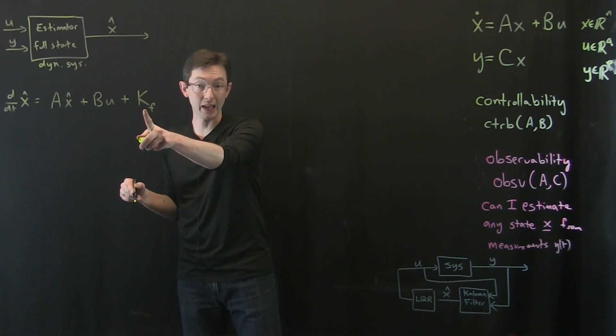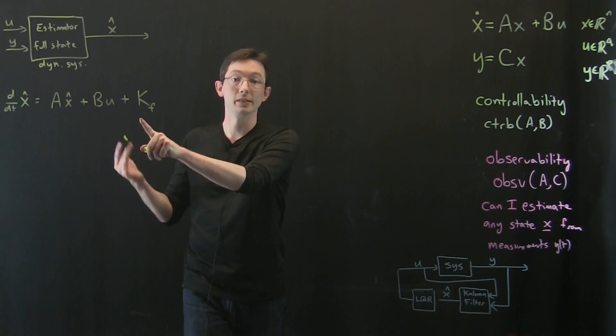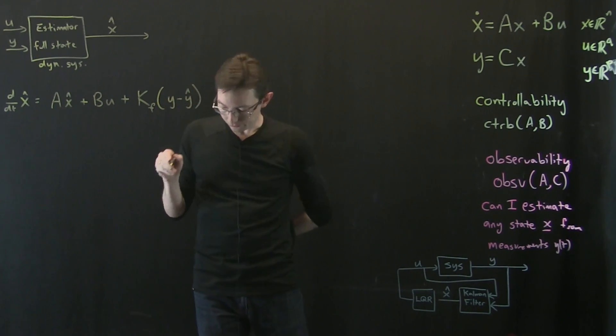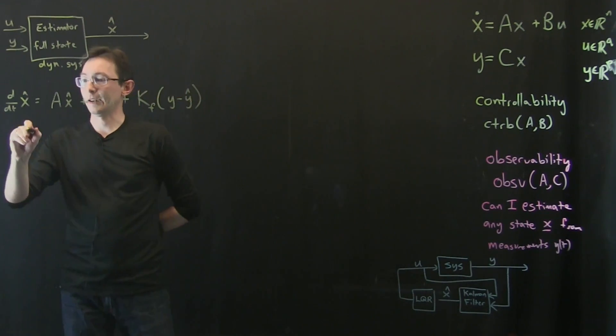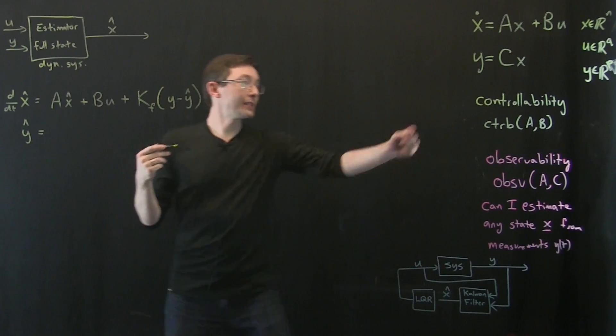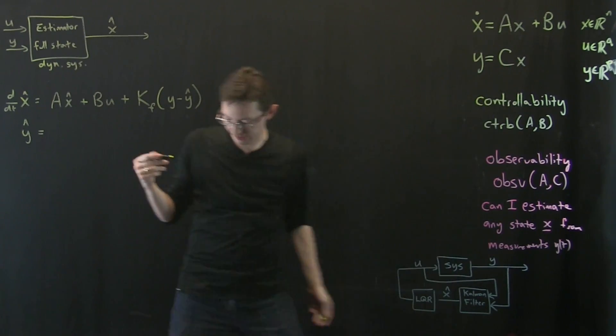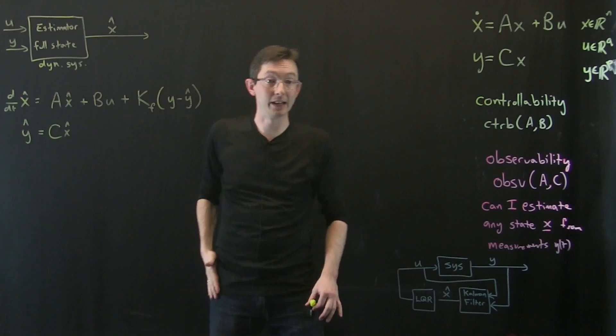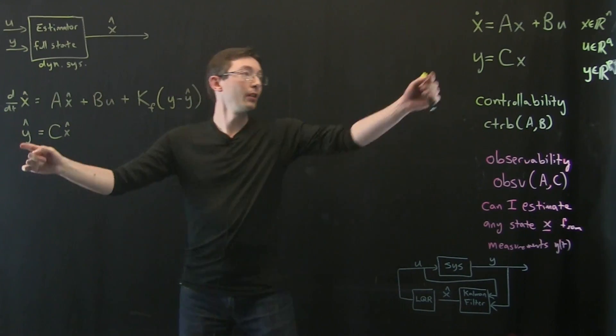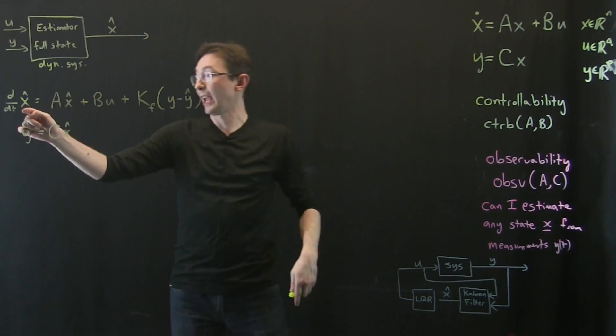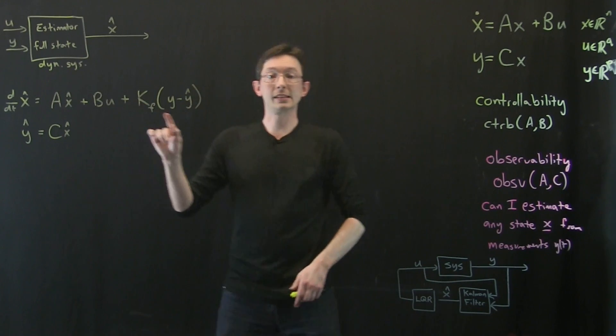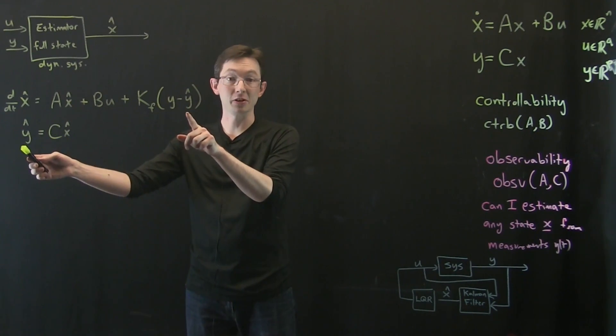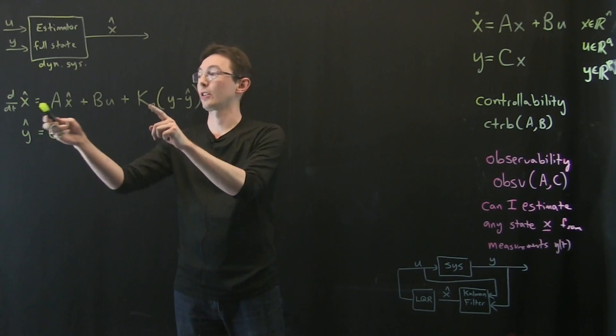I'm going to have some constant matrix K, and I'm also going to find this using the solution to a Riccati equation, times Y minus Y hat. And you might ask, what is Y hat? Well, Y hat is just this output equation on X hat instead of on X, so it's just equal to C times X hat. So this has not been motivated yet, I'm just writing this down. So it looks a lot like the dynamical system for X.